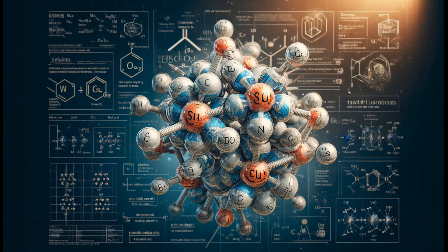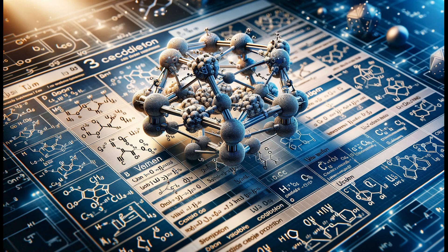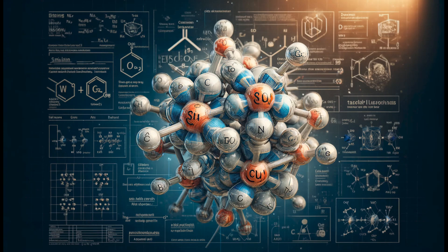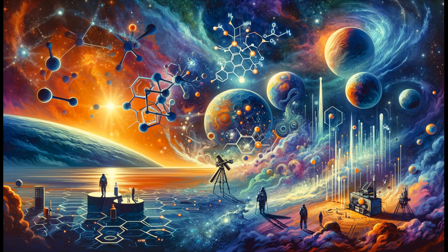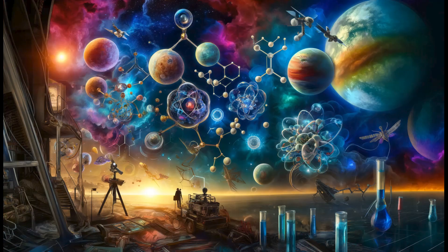These elements have remarkable chemical similarities due to their valence electron configurations, which enable them to form four covalent bonds with other atoms. This similarity raises a compelling question in astrobiology and theoretical chemistry. Could silicon, like carbon, underlie life elsewhere in the universe?